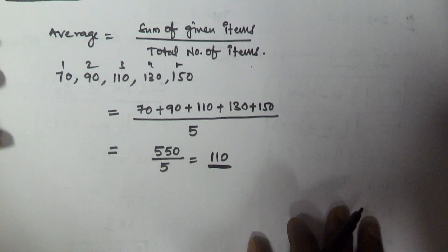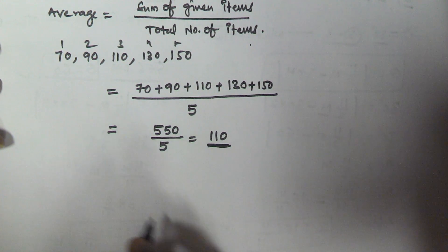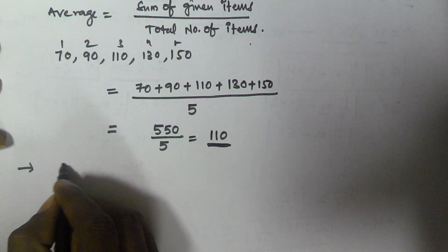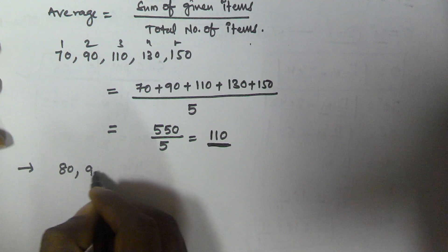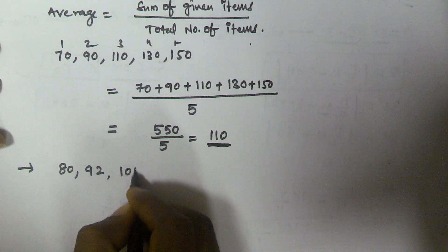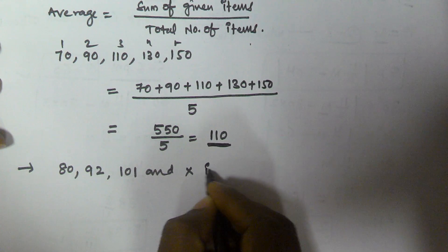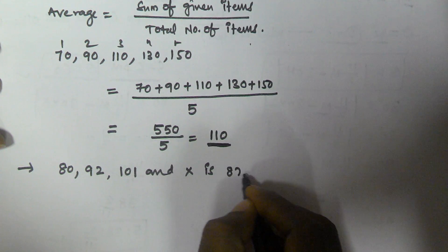Let's solve another problem based on average. The average of 80, 92, 101, and x is 87. Find x.